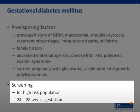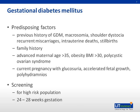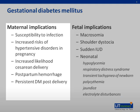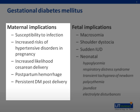Gestational diabetes mellitus has an important impact on pregnancy and may have both maternal and fetal implications, especially if not well controlled. Maternal implications include susceptibility to infection, increased risks of developing hypertensive disorders in pregnancy, increased likelihood of cesarean delivery, postpartum hemorrhage, and persistent diabetes mellitus post delivery.